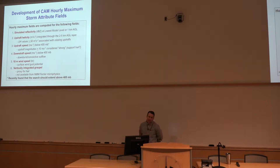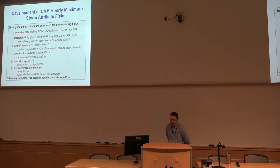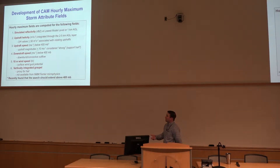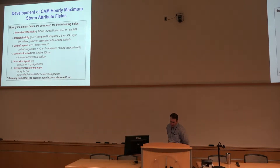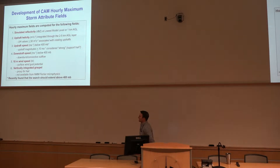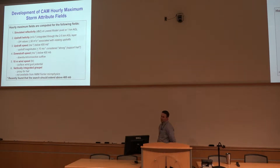10-meter wind speed also seems to be a pretty strong underestimate of general wind potential, but if you consider lower thresholds it does okay. There's also a vertically integrated graupel field which is supposed to be a proxy for hail, but that field is highly correlated with a lot of the other fields like updraft speed. We don't generally find a lot of additional utility from that type of field.